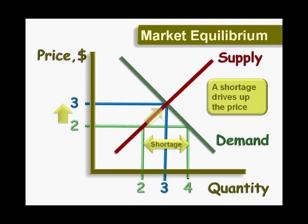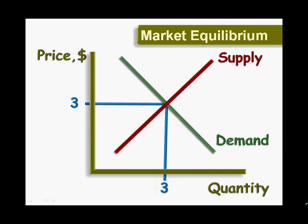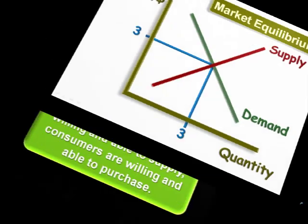As the price rises, consumers won't want as many, but suppliers will have an incentive to supply more. Adjustments are made until the market price rises to equilibrium, where again everything supplied is purchased.